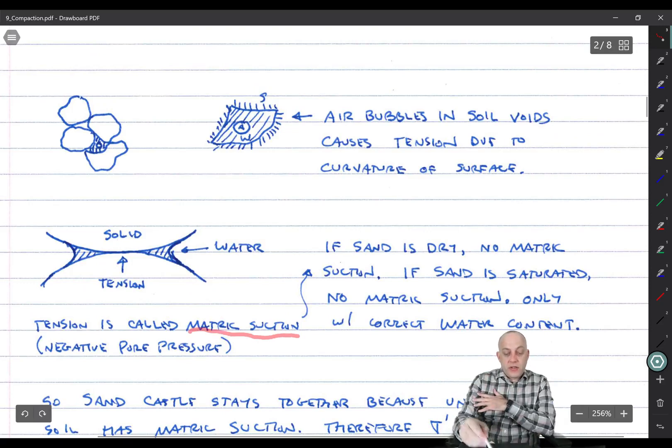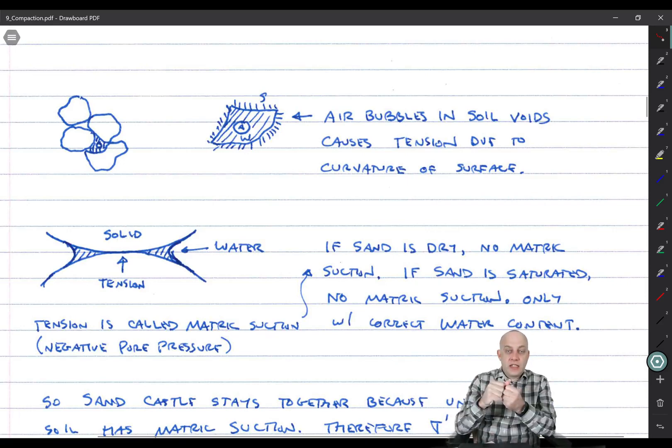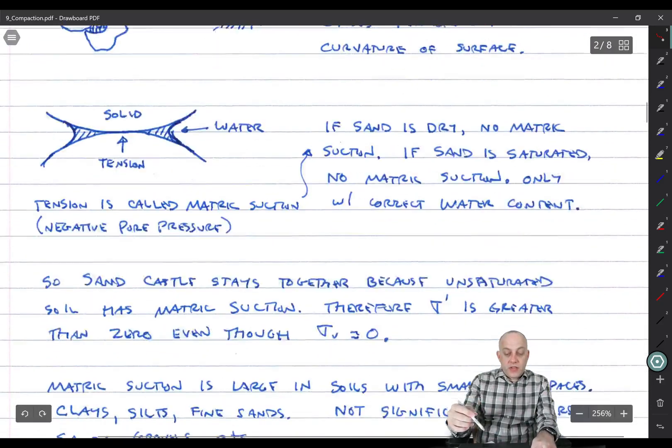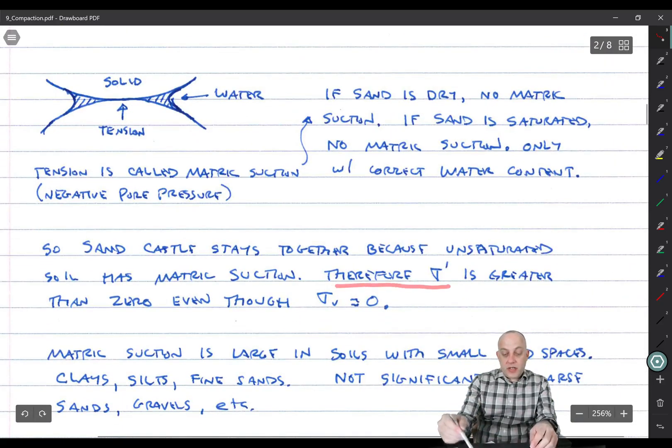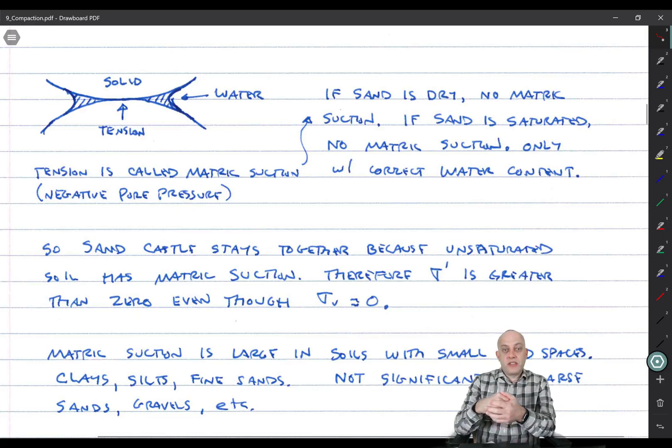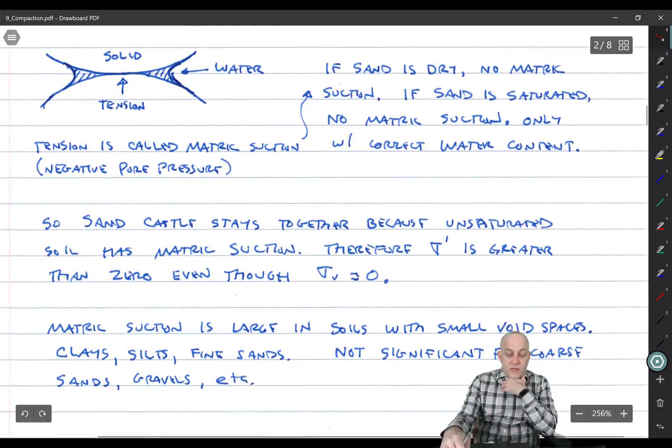So this tension is called matrix suction. If you hear somebody talk about matrix suction, they're talking about unsaturated soil and the effective stress that you get from having a mix of water and air in pore space. Negative pore pressure. Alright, so sandcastles stay together. σ' is greater than zero because we have σ'v = σv - u, right? Vertical effective stress equation. If u is a negative number and σv is zero, then σ'v is a positive number. The particles are being held together.